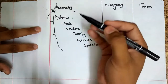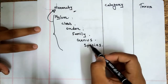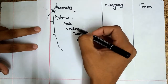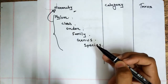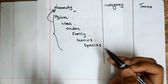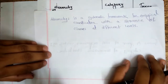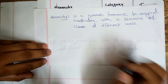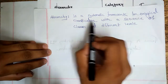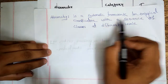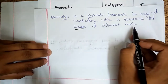In the definition of hierarchy, we can say that hierarchy is a framework for zoological classification with a sequence of different classes or different ranks. So hierarchy is a systematic framework for zoological classification with a sequence of classes which are ranked at different levels.